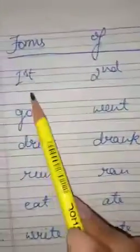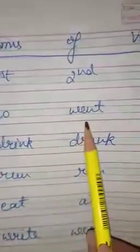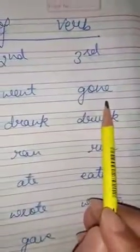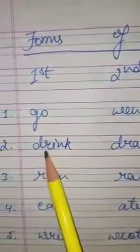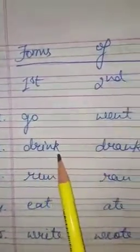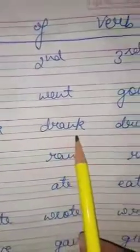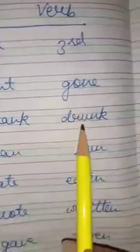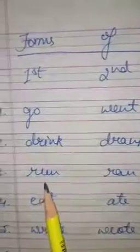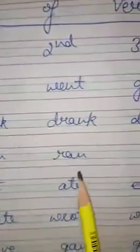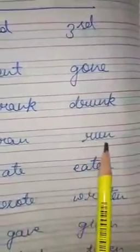Let's read the verb forms. Go — went — gone. Drink — drank — drunk. Run — ran — run. Eat — ate — eaten.